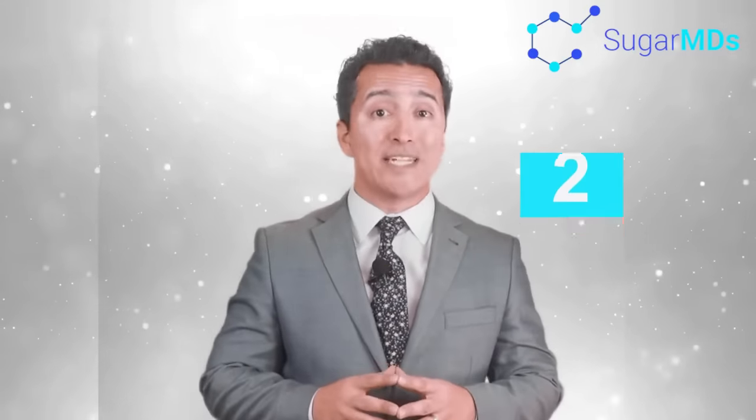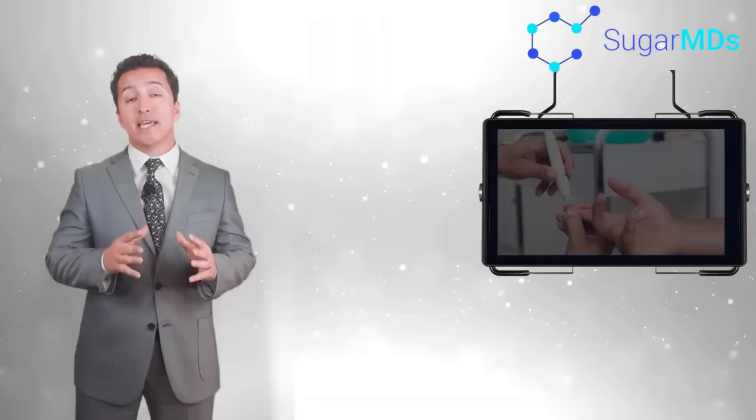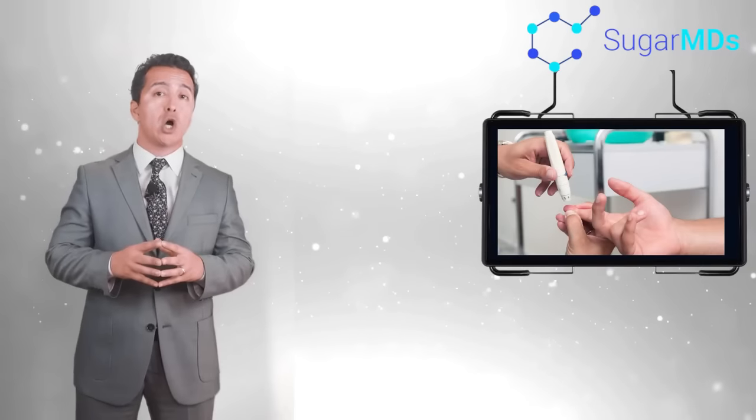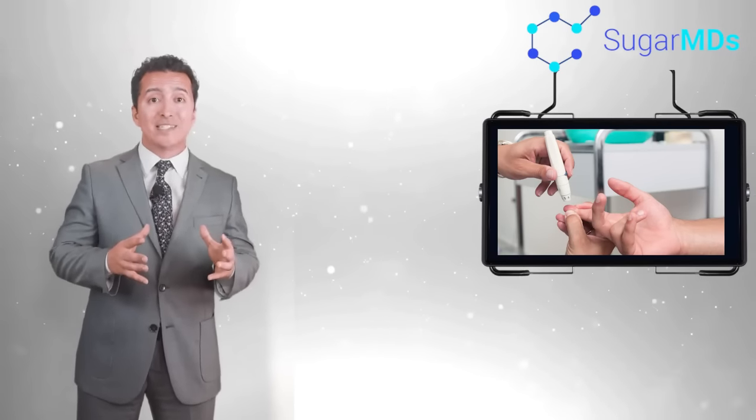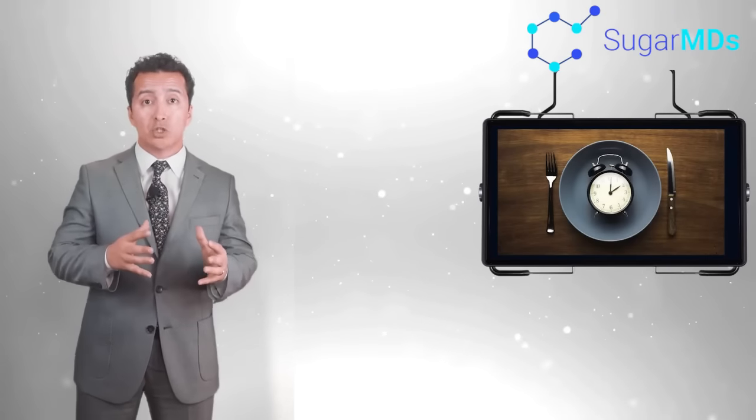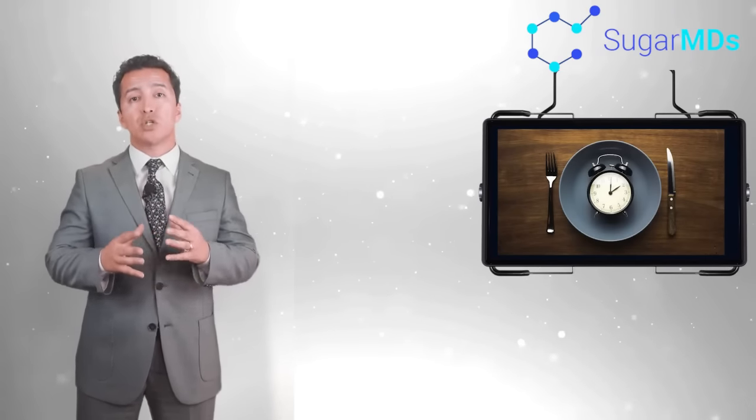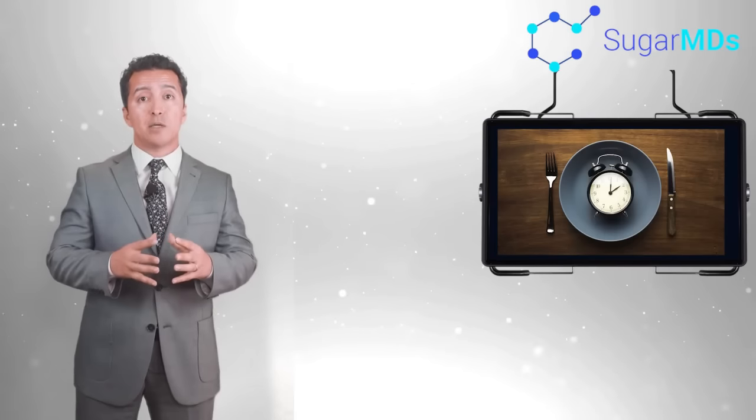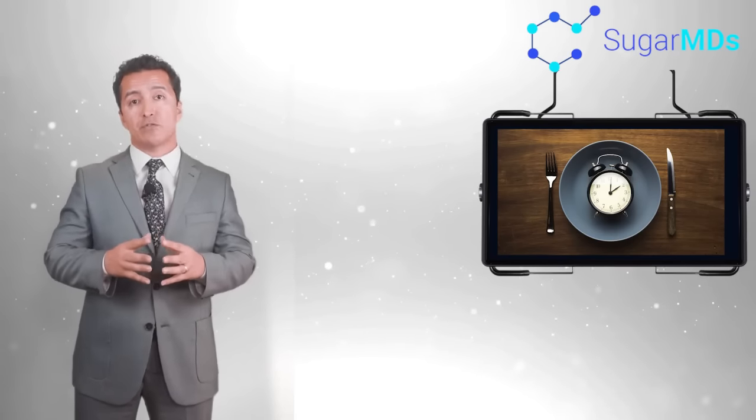Number two, time your tests right. What do I mean by that? If you're using a CGM, which is Continuous Glucose Monitoring System, you should be testing your blood sugar with finger sticks at least one to three times a day, depending on your medications. The best time to test is after a meal, although I highly recommend knowing your fasting blood sugars because your blood sugars will change drastically in between meals, before meals, after meals.